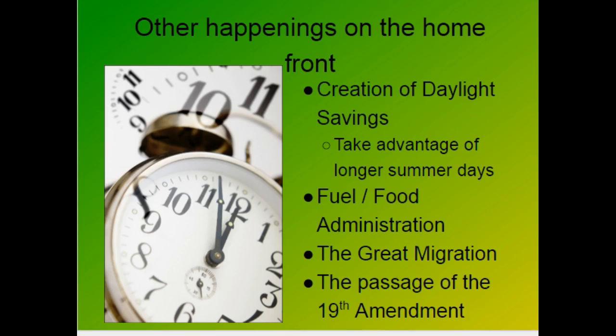These are all different reasons why African Americans came North, fueling a huge migration of people northward. The 19th Amendment was also passed during this period — in some ways it's a war measure because women were taking on a larger role in the United States. These are the main parts of America on the home front. If you have any questions, please feel free to ask me in class.